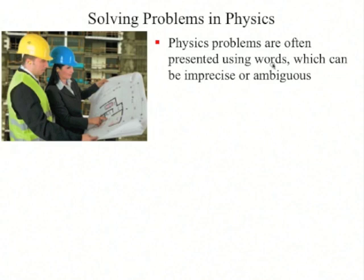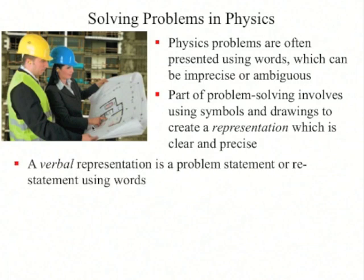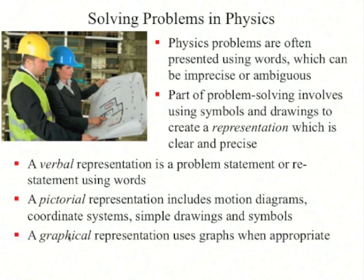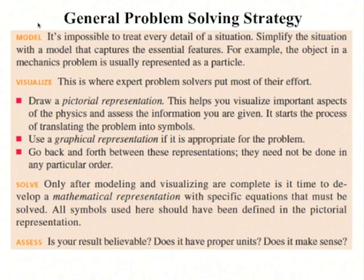Physics problems are often presented using words, which can be imprecise or ambiguous, so part of your problem-solving involves using symbols and drawings to create a clear and precise representation. Some terminology: a verbal representation uses words; a pictorial representation uses diagrams; a graphical representation uses graphs; and a mathematical representation uses equations which you then solve. Knight uses a general problem-solving strategy in every example in this textbook: model, visualize, solve, and assess. Please familiarize yourself with these steps.